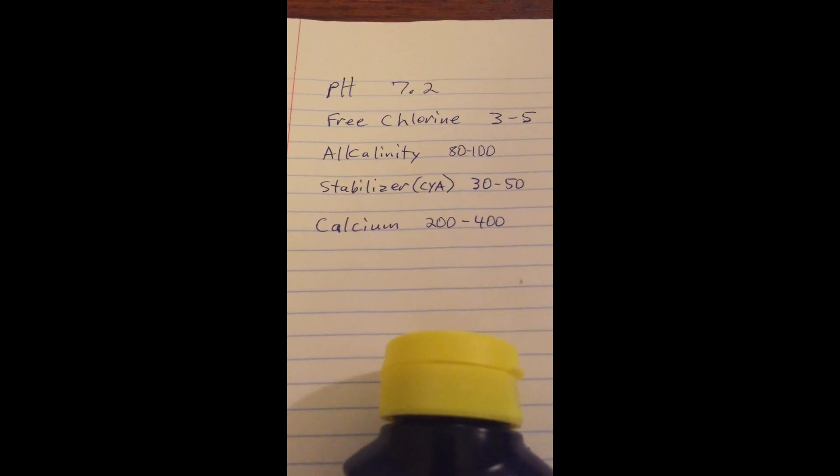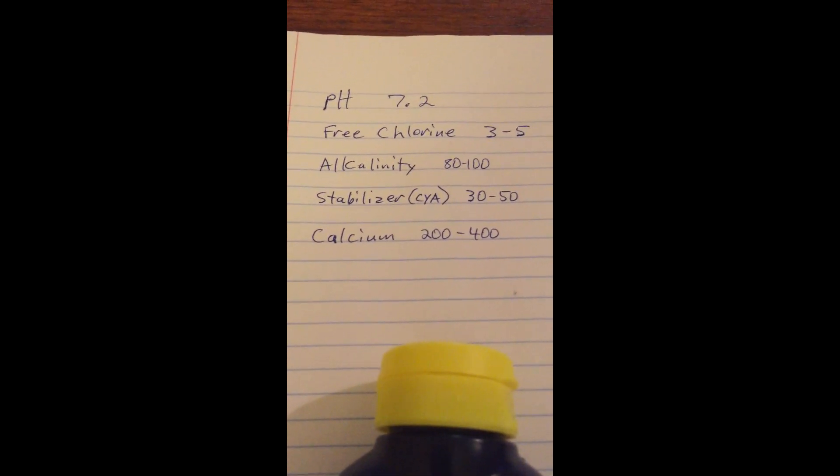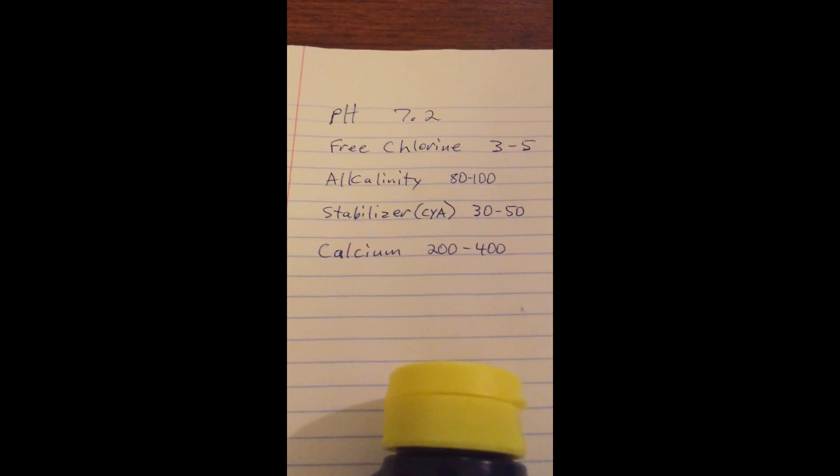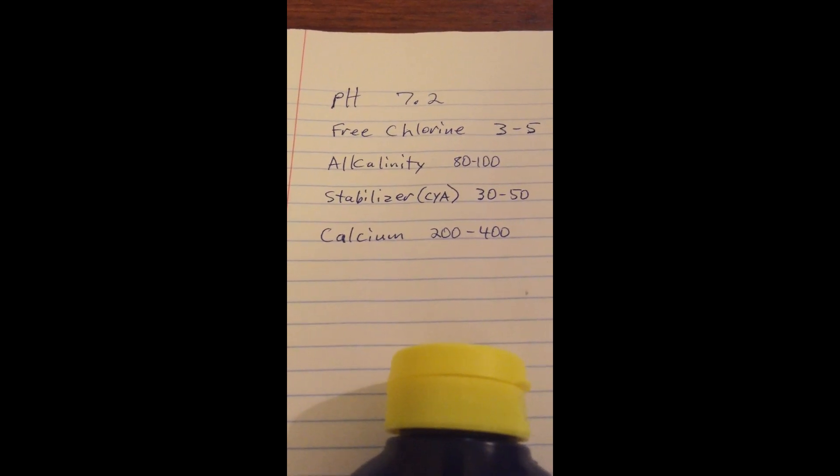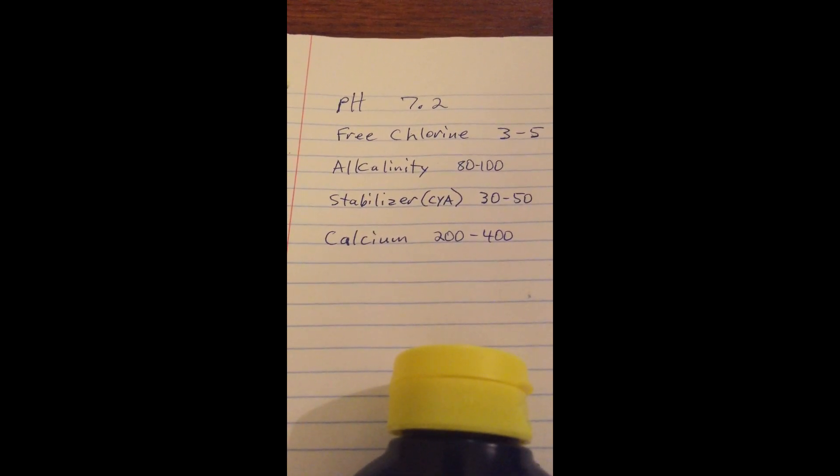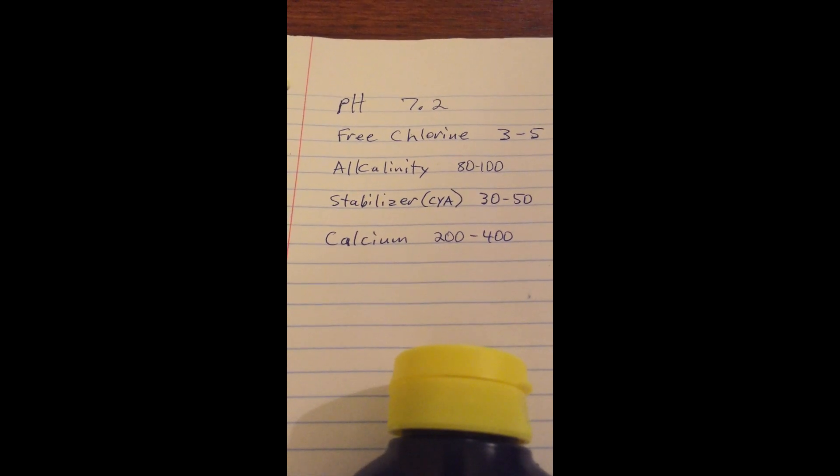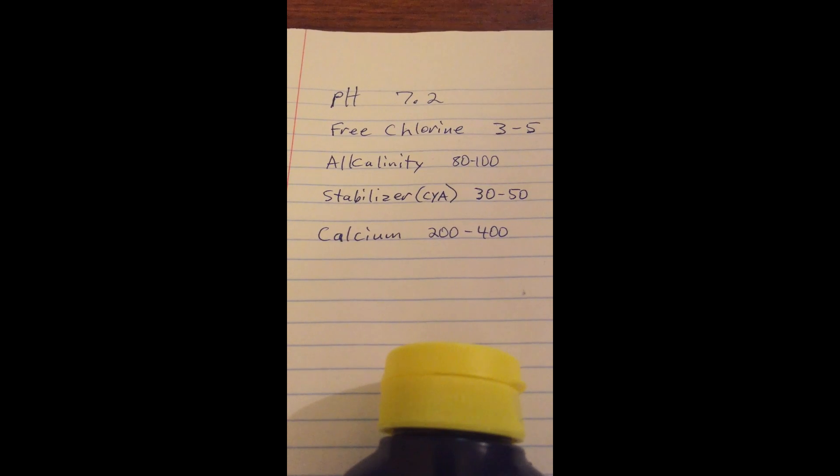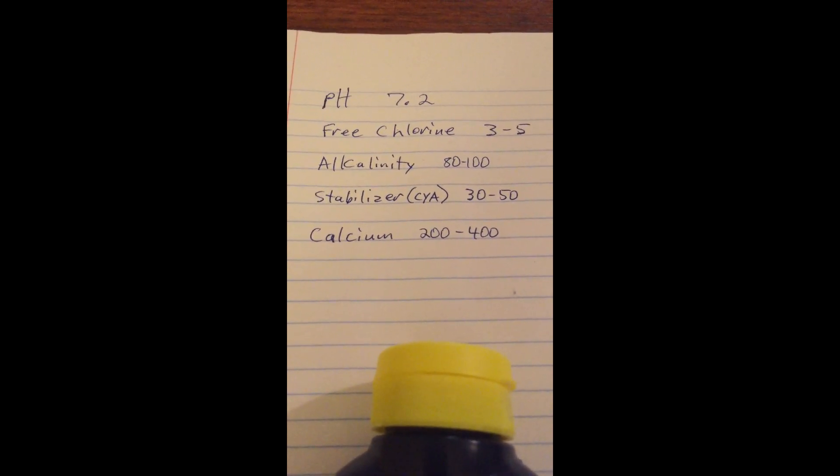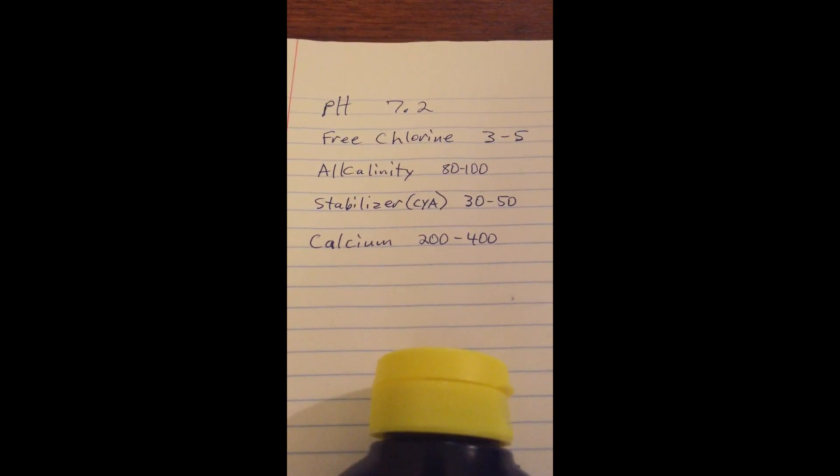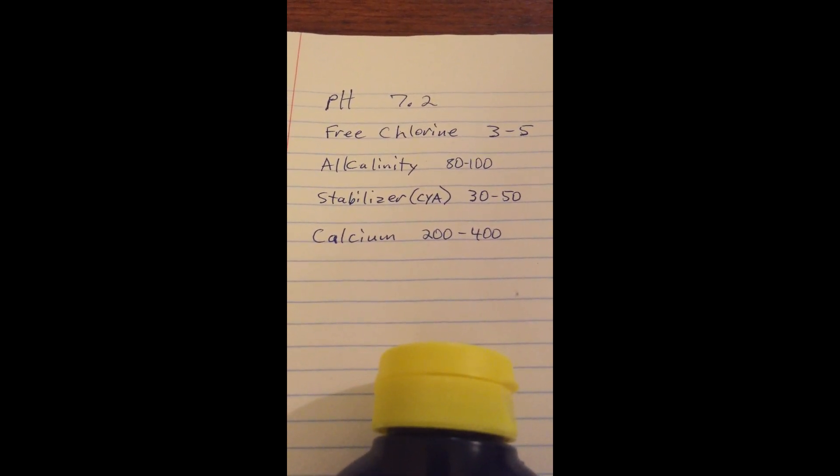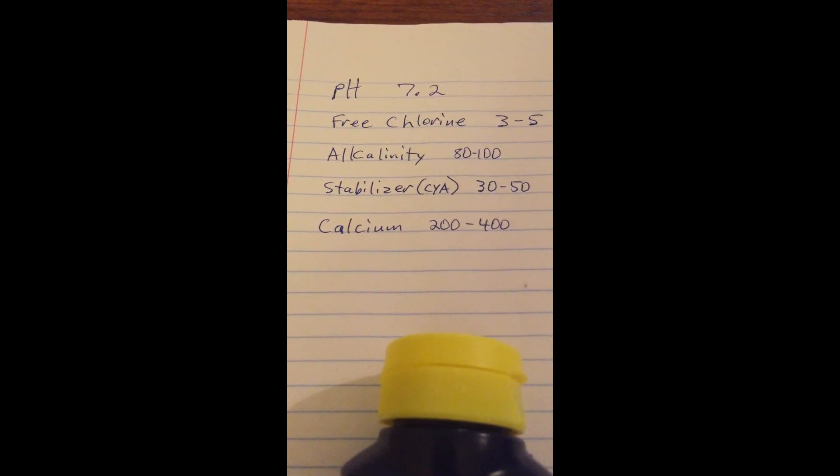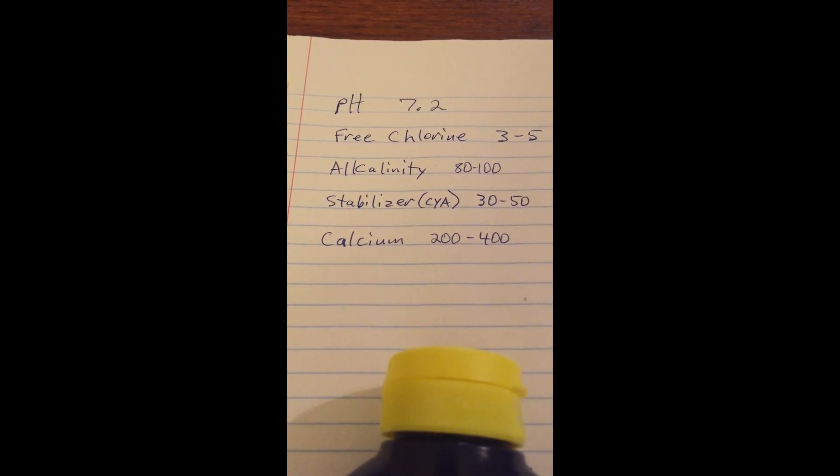They usually will test the calcium level for you when they test the water sample for you. I recommend you test that twice a year. So at the beginning of the swimming season, maybe April, May, then go ahead and take a water sample into a pool store, have them test it for you, see if you need to add any calcium. And then at the end of the swimming season, before you go into the rest of the year, test it then as well. So maybe September, October, and then put some calcium in to balance it if you need it. That's not something that you're going to need to deal with on a weekly basis is your calcium level.